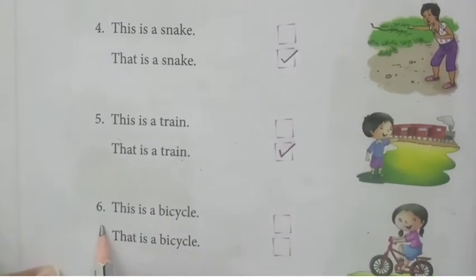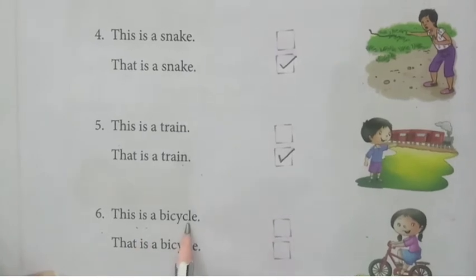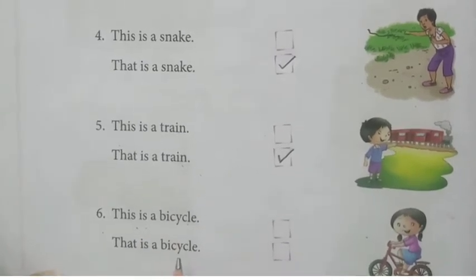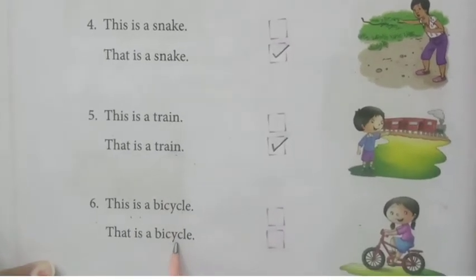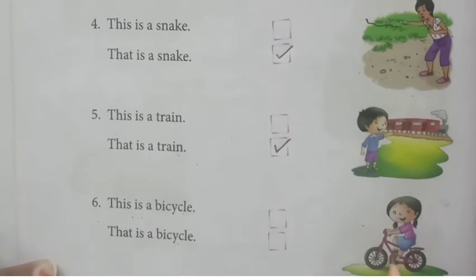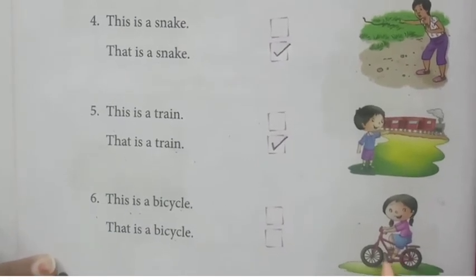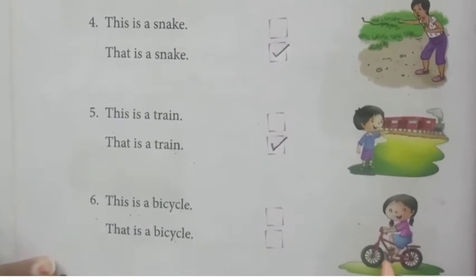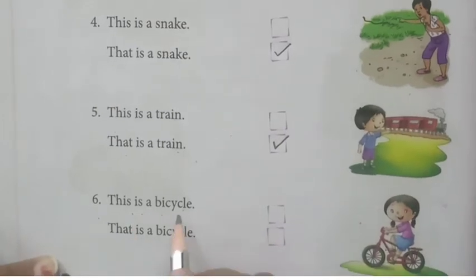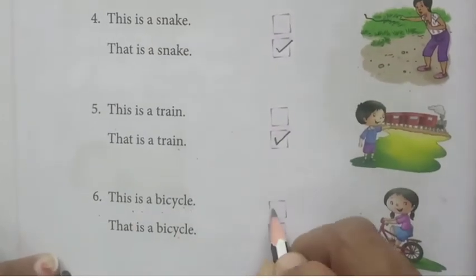Number 6. 'This is a bicycle' or 'That is a bicycle'? Bicycle is nearby — the girl is riding a bicycle. So, what we have to use? 'This.' This is a bicycle. Tick here.